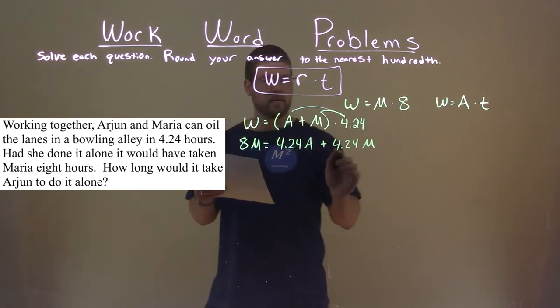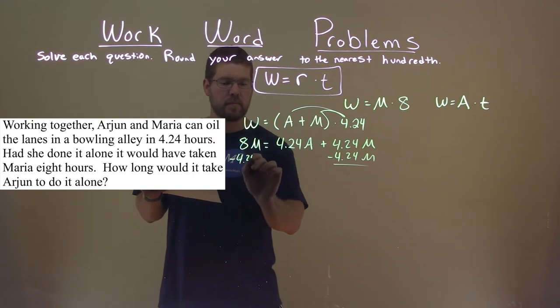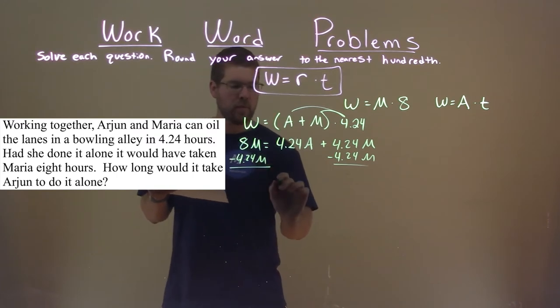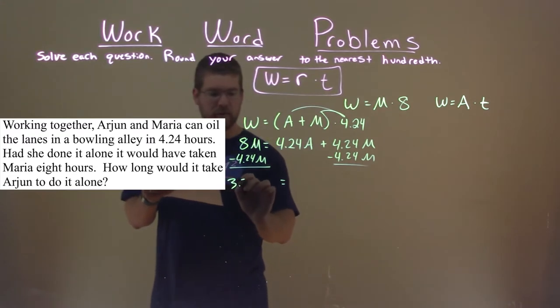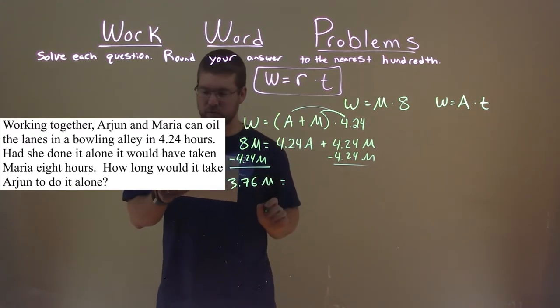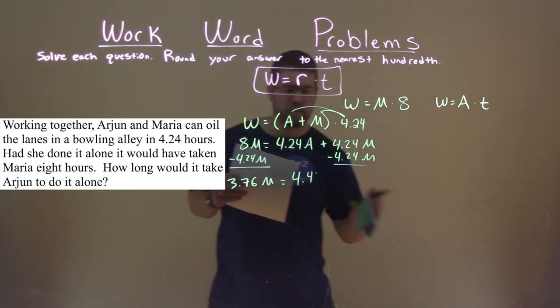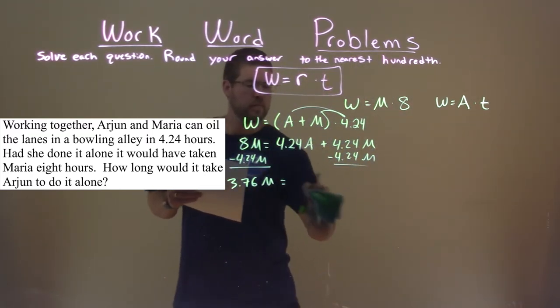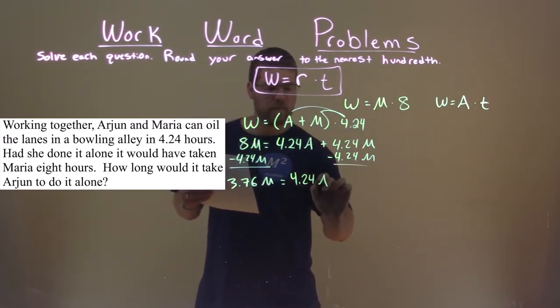We're going to subtract 4.24M to both sides, and we're left with 8 minus 4.24 is 3.76 times Maria's rate, is equal to 4.24 times Arjun's rate.